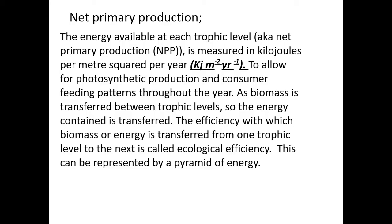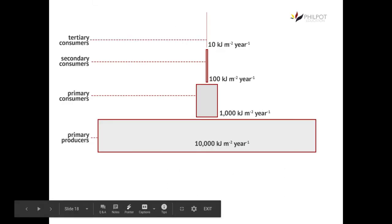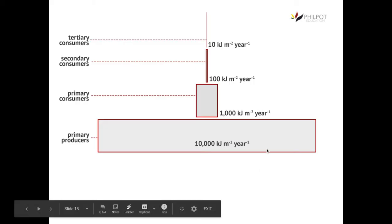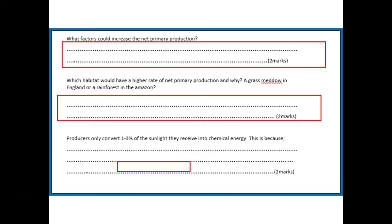Net primary production can be represented by a pyramid of energy. This is an example of a pyramid of energy. We looked in part one at why it decreases by a factor of 10 each time. If you want to pause and have a go at these questions, please do so now.